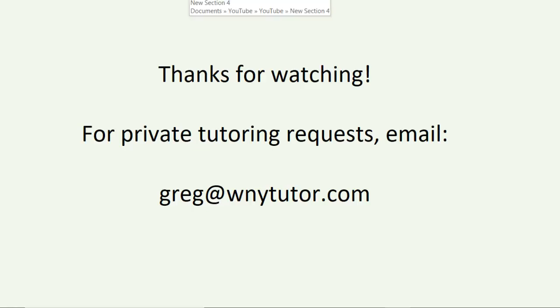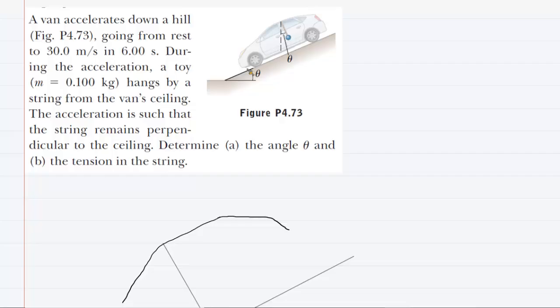Thanks for taking the time to watch the video. If you're interested in any private tutoring sessions, please feel free to email me at the address listed on the screen. In part A of our question, we have to find the angle that the incline makes with the horizontal. In order to do that, we have to draw a free body diagram that shows all of the forces acting on that toy suspended from the ceiling of the car.